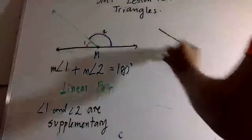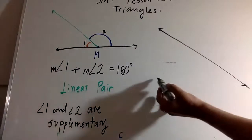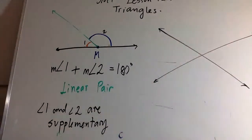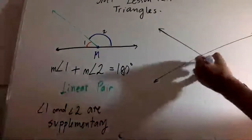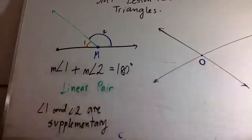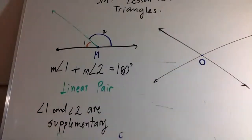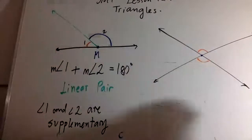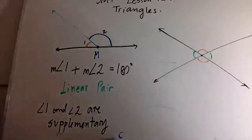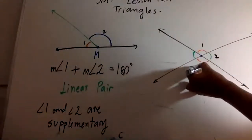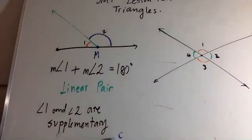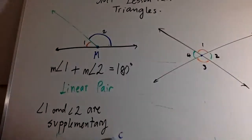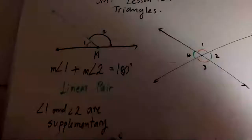Now with two lines that intersect — let's say the intersecting point is called O — this vertex O is where the two lines cross. When two lines are intersected you generate four angles. I'm going to label them angle one, angle two, angle three, and angle four.